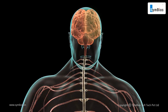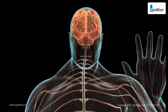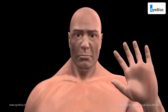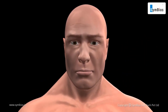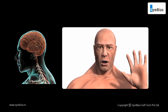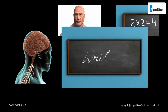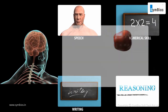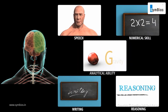The left hemisphere controls the right part of the body, and the right hemisphere controls the left side of the body. The areas associated with speech, numerical skills, writing, reasoning, and analysis are located in the dominant left hemisphere.